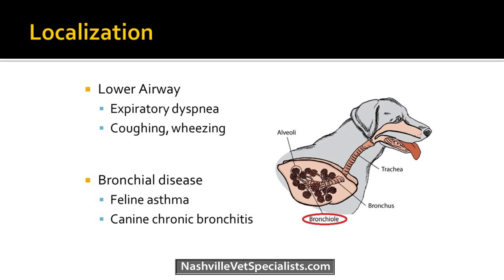For lower airway disease, specifically the bronchioles, you'll see expiratory dyspnea — airways collapse or narrow when the pet tries to expire, with increased expiratory effort and often a push at the end of expiration. Feline asthma is the number one emergency for bronchial disease. Canine chronic bronchitis usually doesn't present as an emergency. Many dogs will have multiple problems — heart disease, pulmonary thromboembolism, and bronchitis as well.